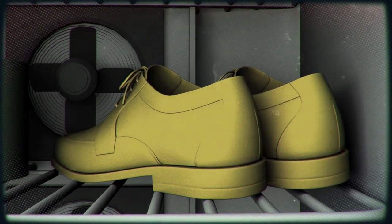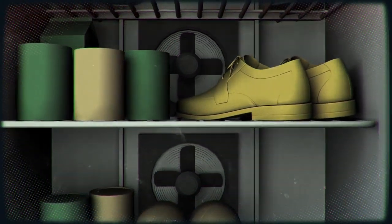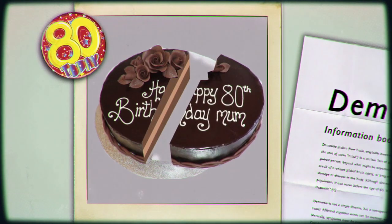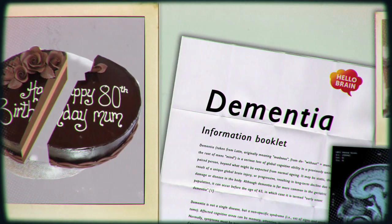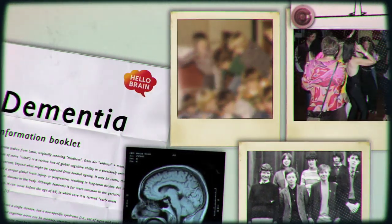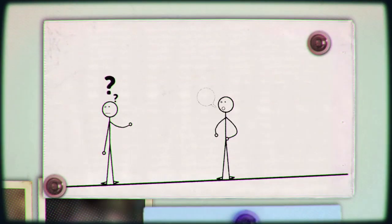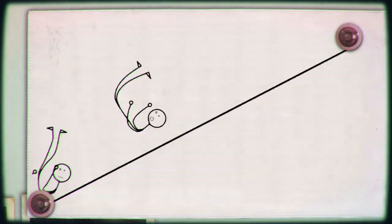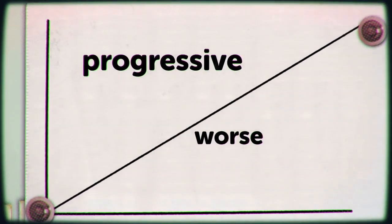But for many, these difficulties in old age can be much more serious. Up to 50% of the over-80s develop dementia. Dementia causes loss of memory and mood changes. People can struggle to speak and understand others. And the condition is progressive. It just gets worse and worse.